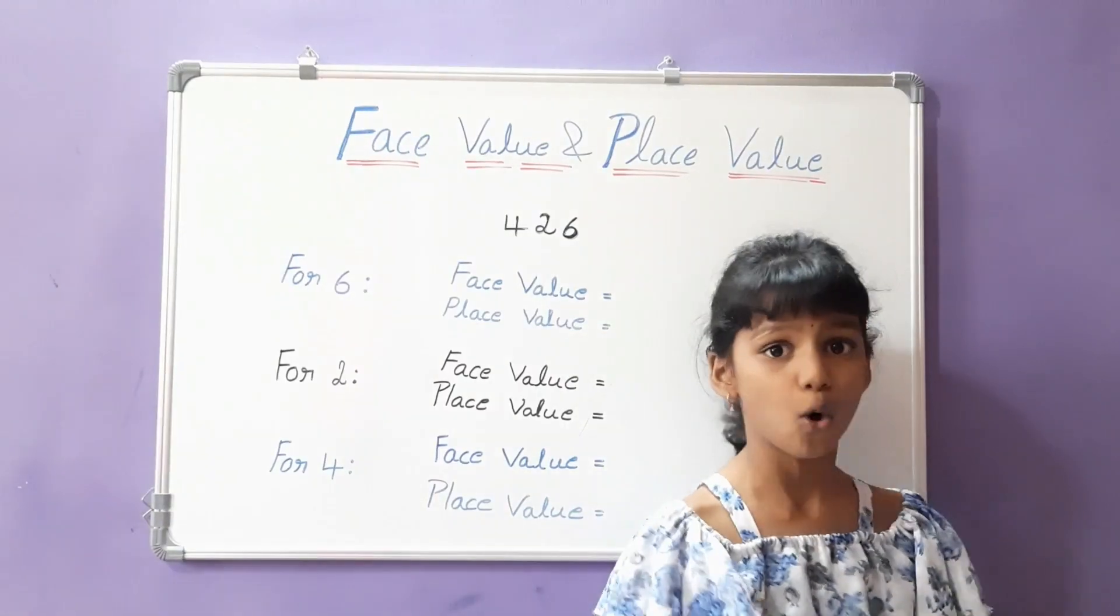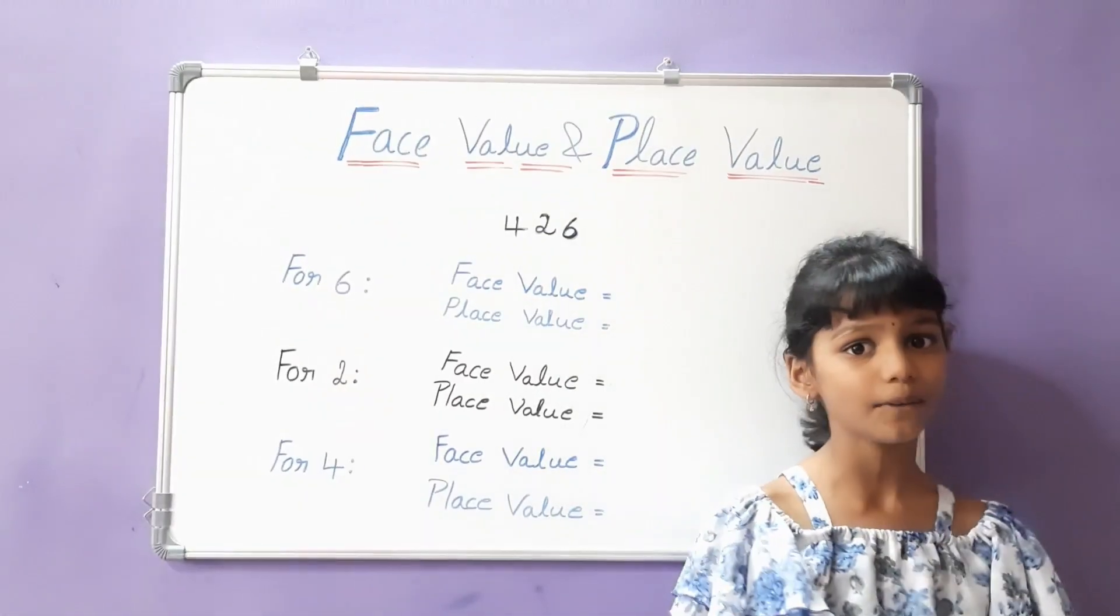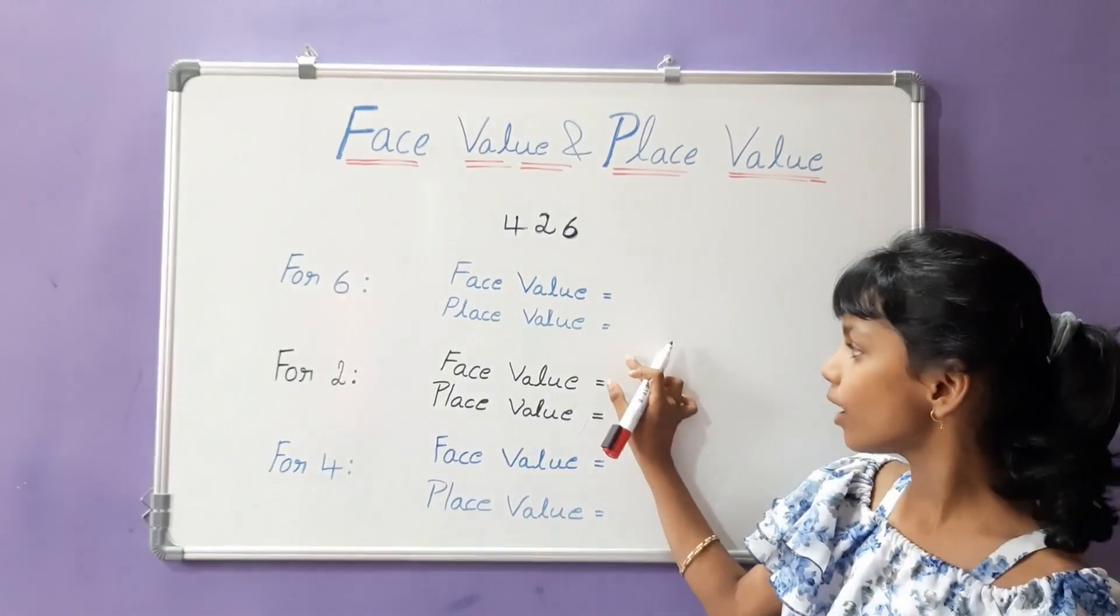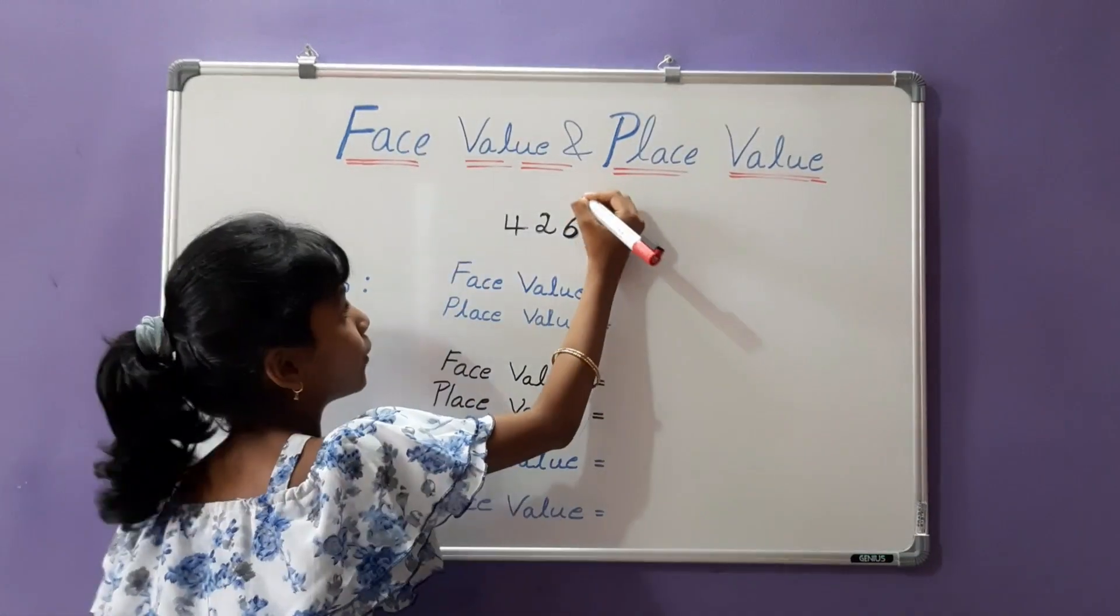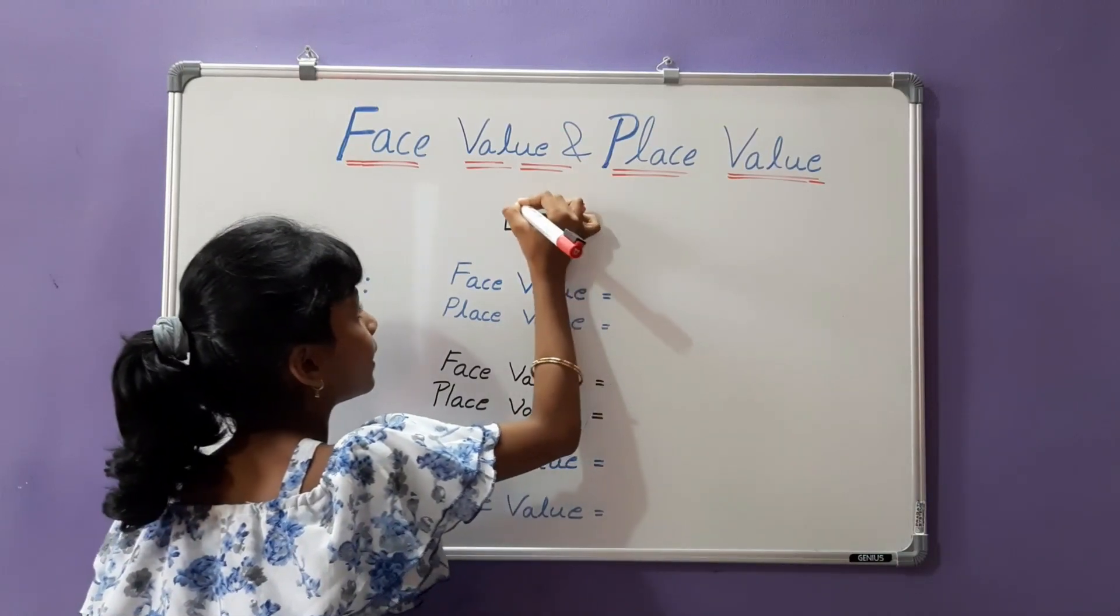Now, we all know what is place value and face value. Let's solve this. First, we have to write O, T, H.